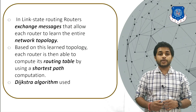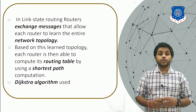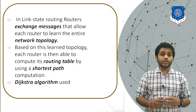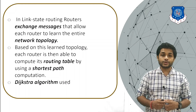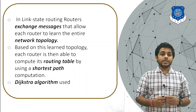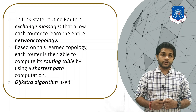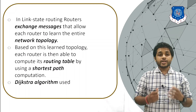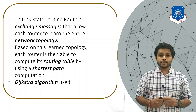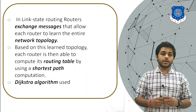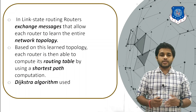In link state routing, all the routers will exchange messages with each other so that they can learn the entire network topology. After that, they will create the shortest path tree using Dijkstra's algorithm. In the network, each and every router will create their own shortest path tree using Dijkstra's algorithm. Let's see how it works.